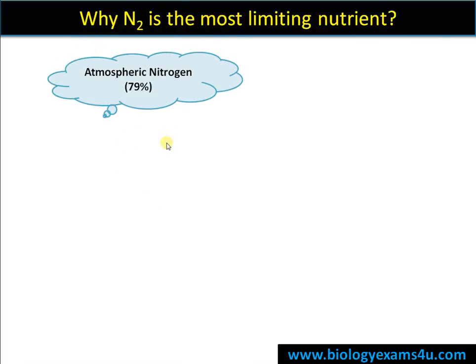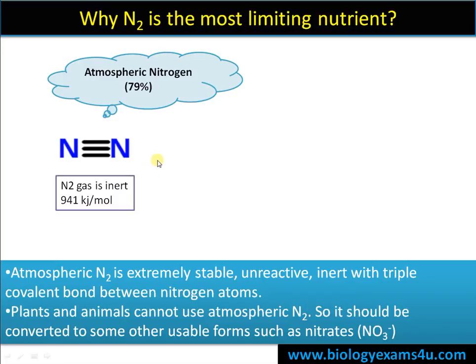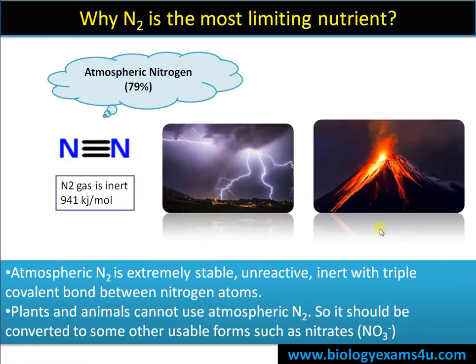In the atmosphere there is approximately 79% nitrogen — the air we inhale is primarily composed of nitrogen — yet this nitrogen cannot be used directly by plants. The reason is that N2 has a triple covalent bond between nitrogen atoms, making it very unreactive and inert. High energy is required to break this triple covalent bond, which occurs naturally by lightning, volcanic eruptions, etc. Therefore, nitrogen is abundantly present in the atmosphere but cannot be utilized by plants and must be converted to another form.